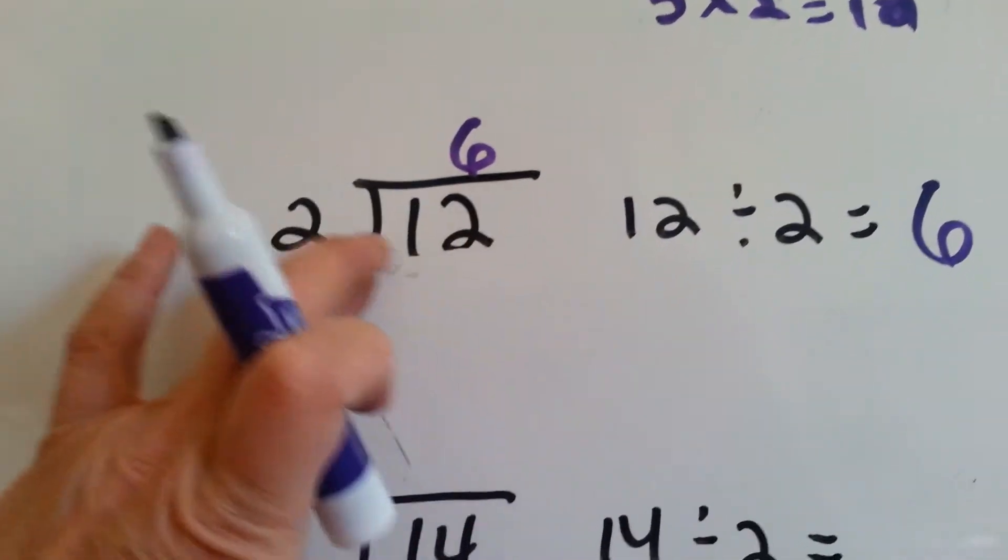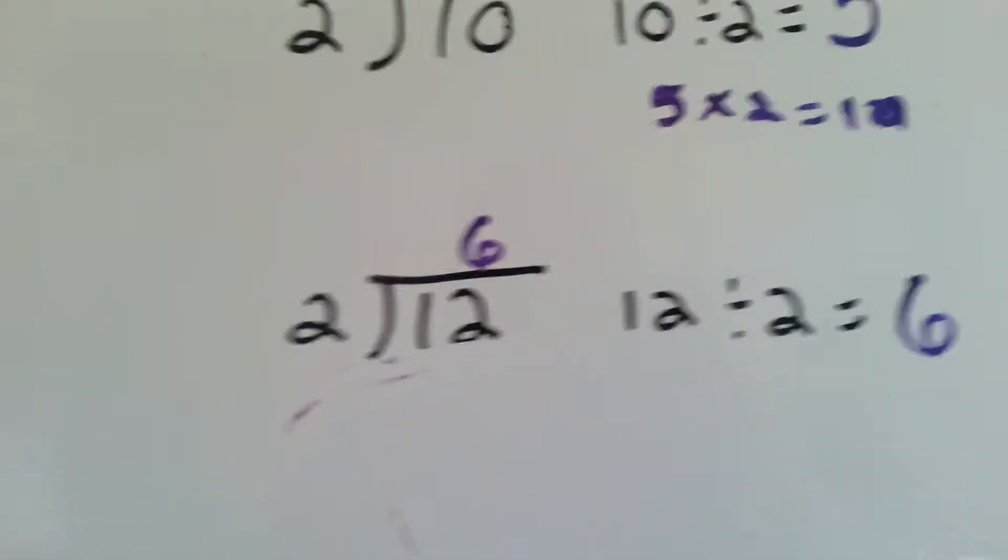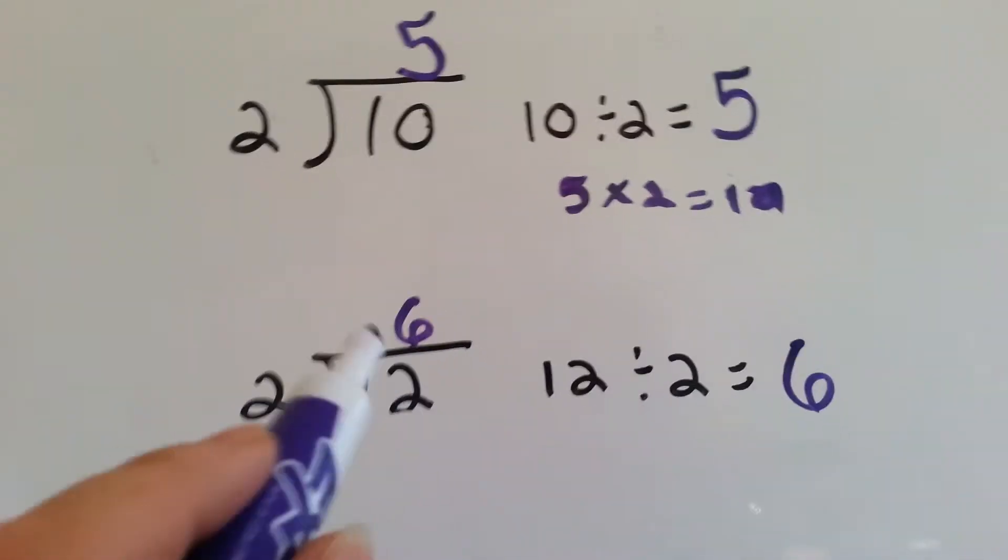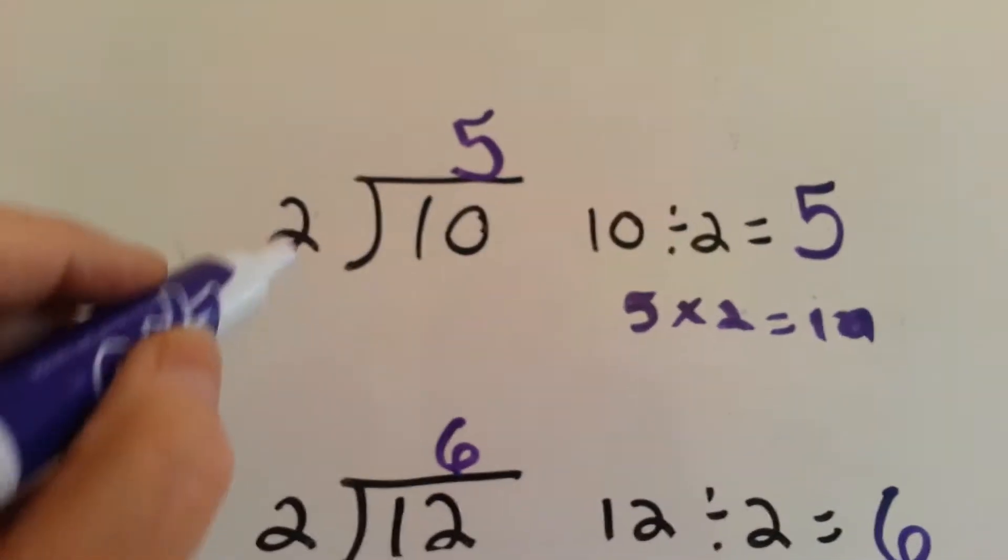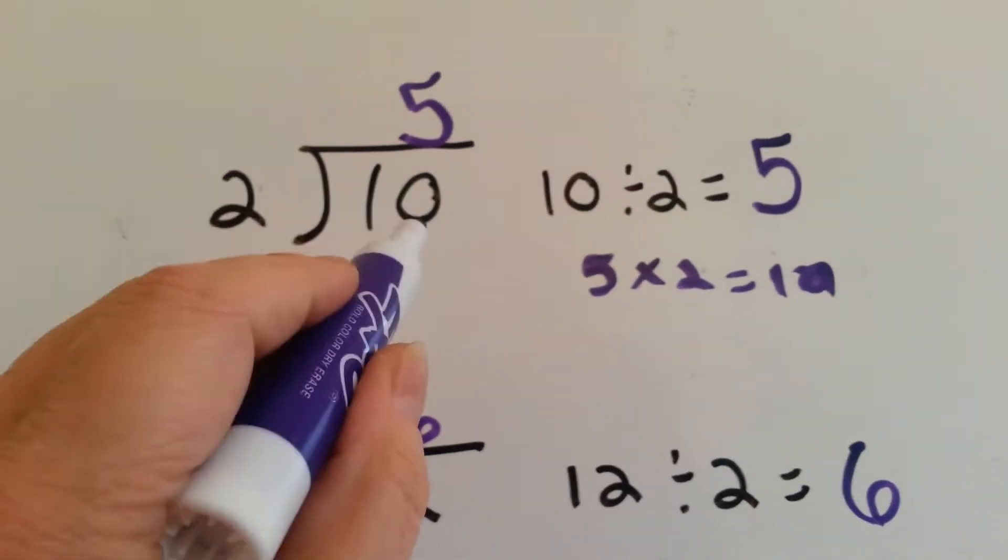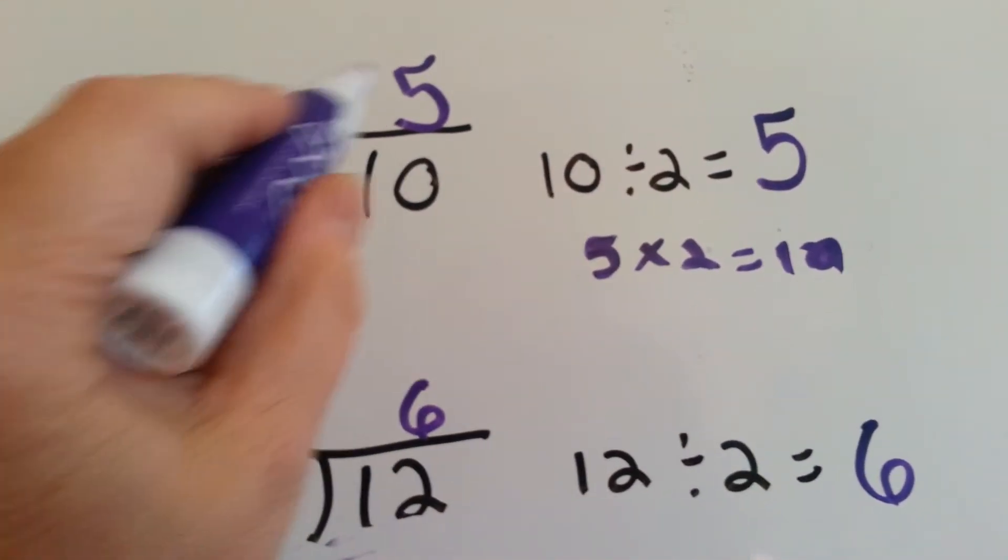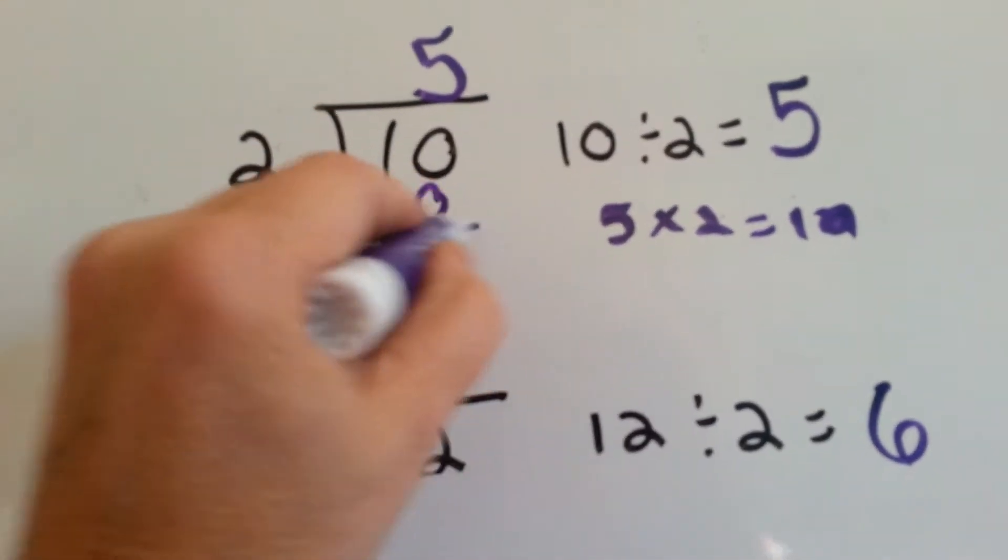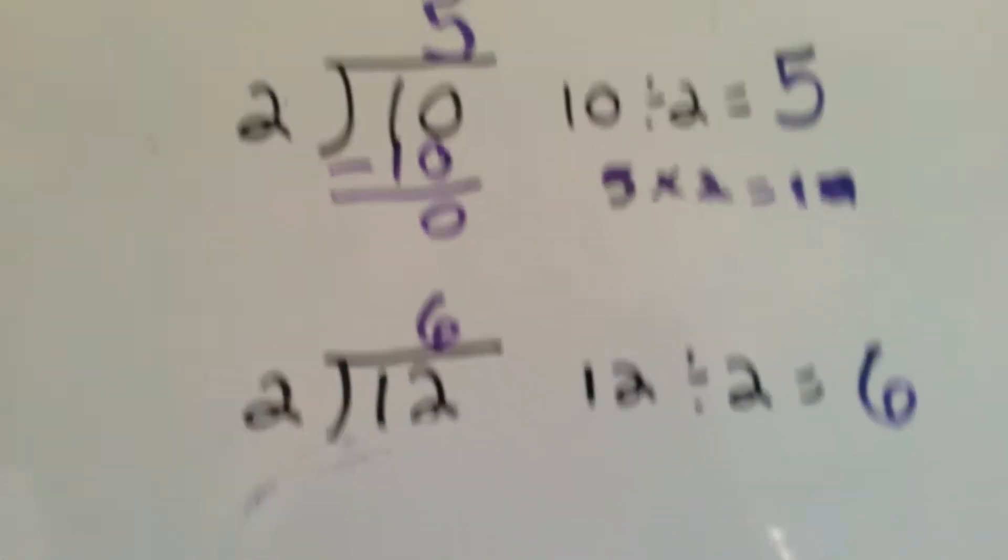Now normally, when you have a long division problem like this, you don't just write it like this. You need to finish it. You would say, 2 goes into 10 5 times. 2 times 5 is 10. We do subtraction and we've got 0 left over.